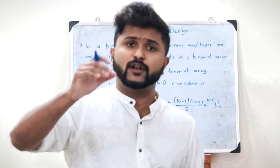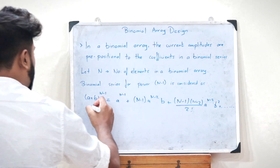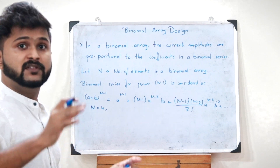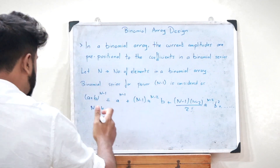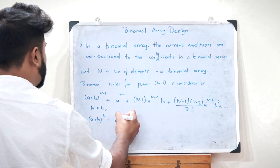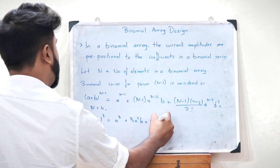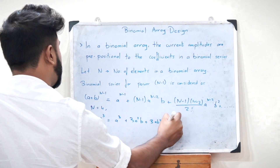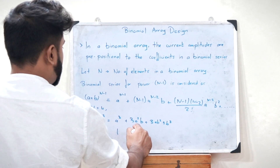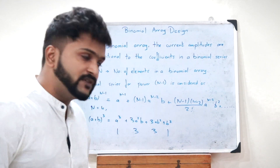For example, if N equals 4, then (a + b)^(N−1) = (a + b)³ = a³ + 3a²b + 3ab² + b³. Therefore the coefficients here are 1, 3, 3, and 1.